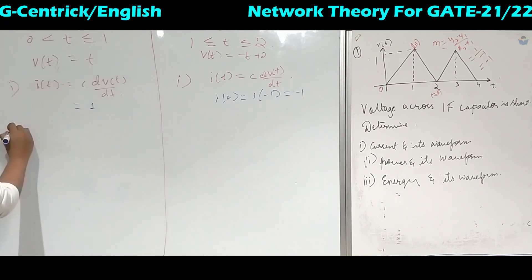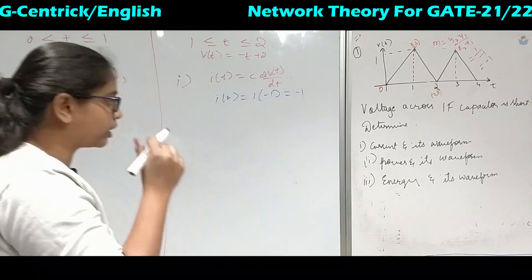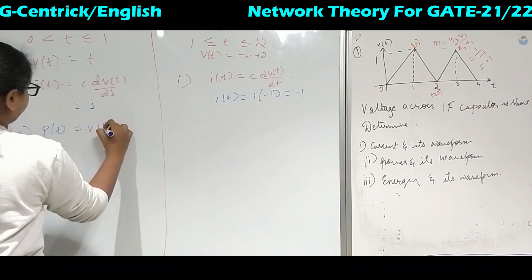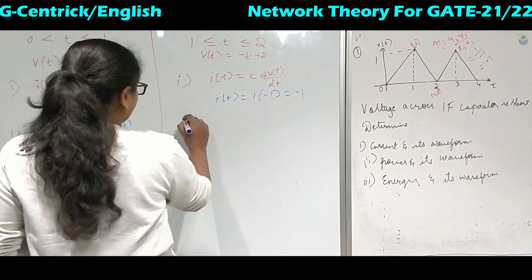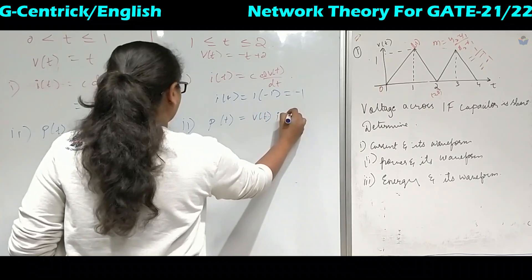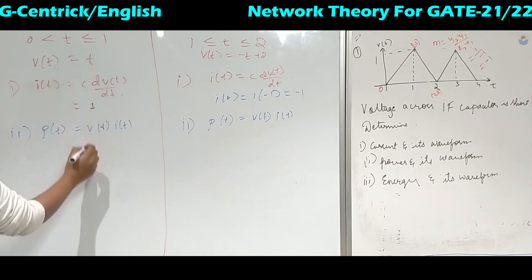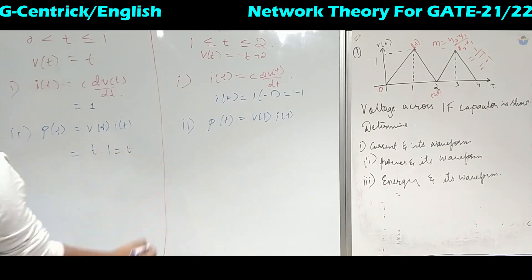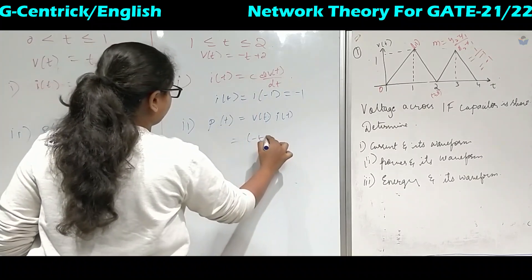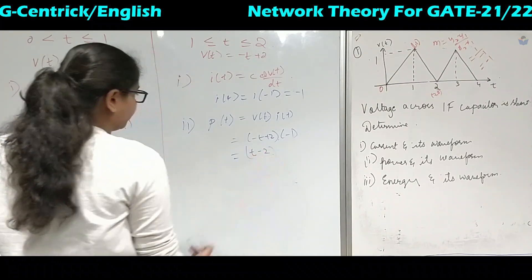For calculating power, P(t) equals V(t) times I(t). From 0 to 1: V(t) equals t and I equals 1, so P(t) equals t. From 1 to 2: V(t) equals minus t plus 2 and I equals minus 1, so P(t) equals t minus 2.